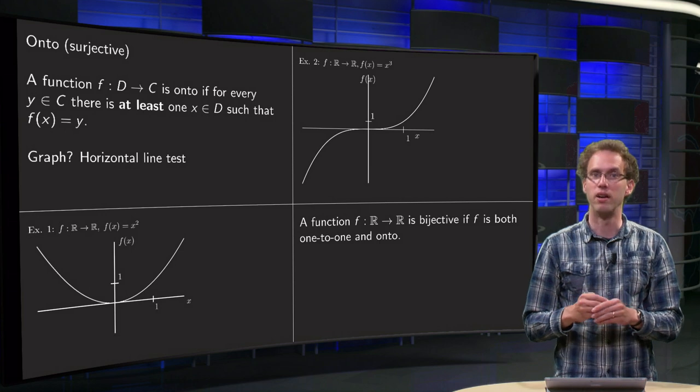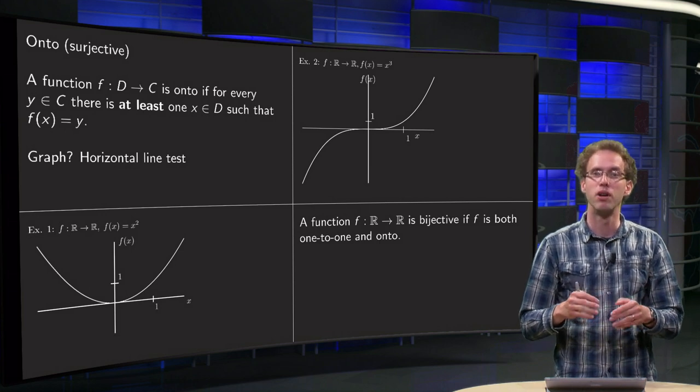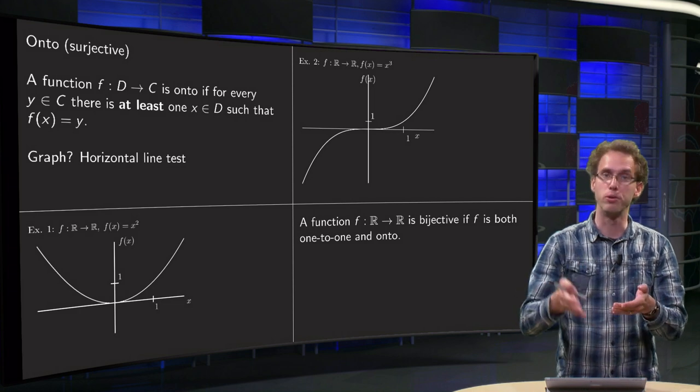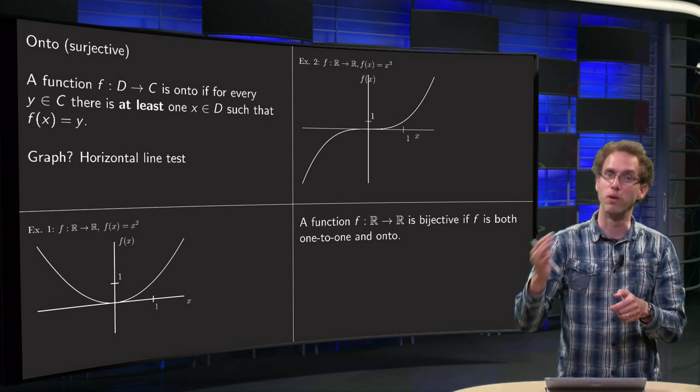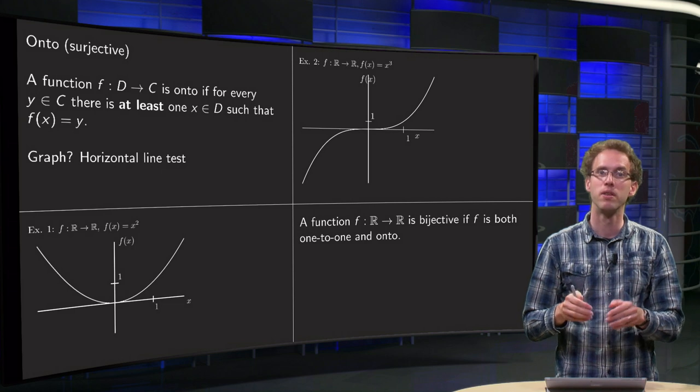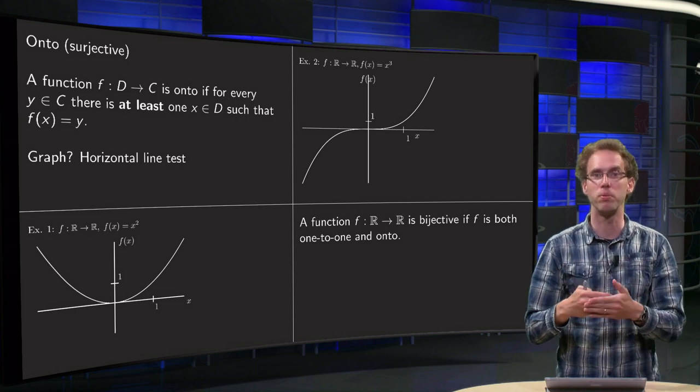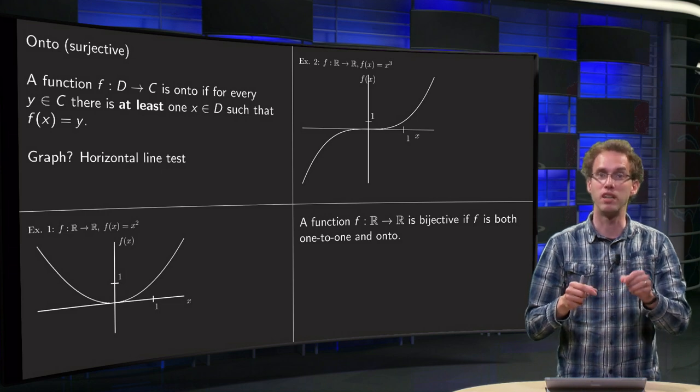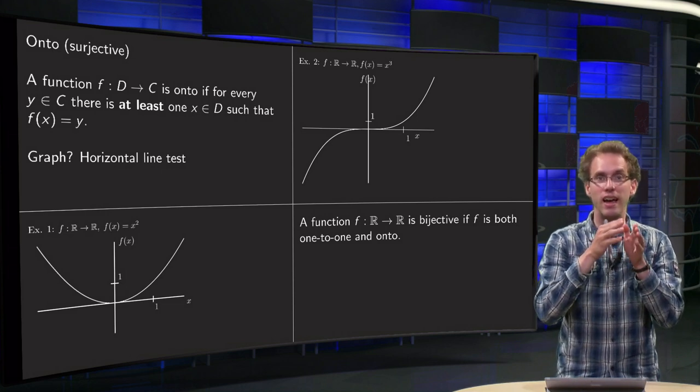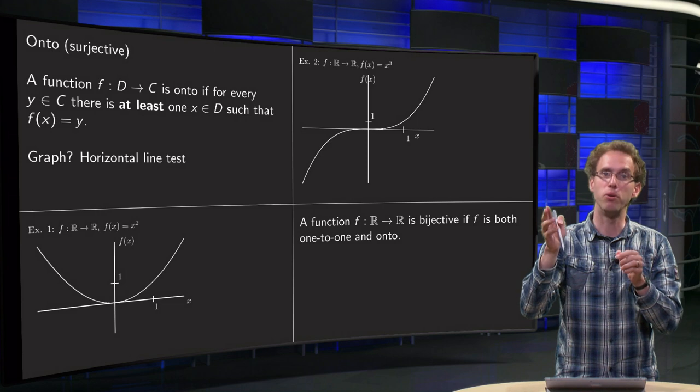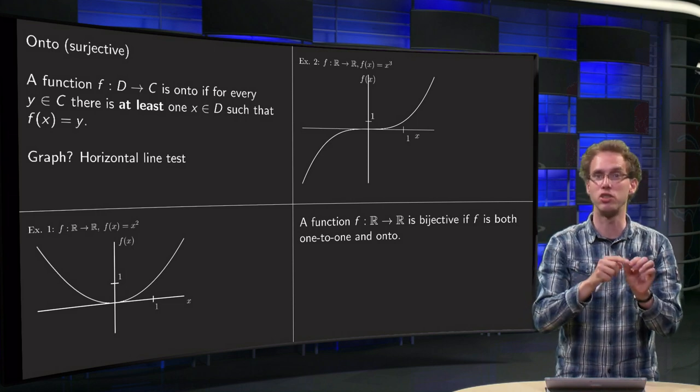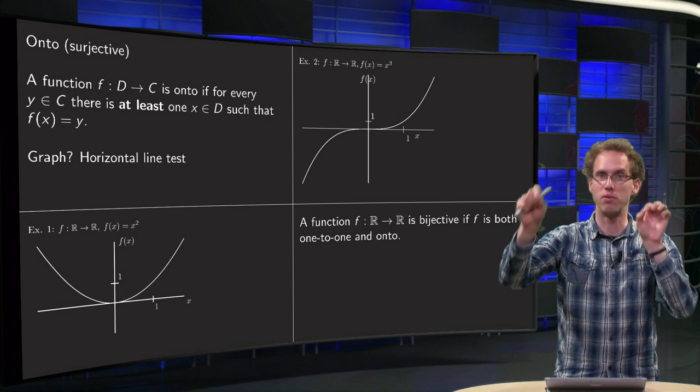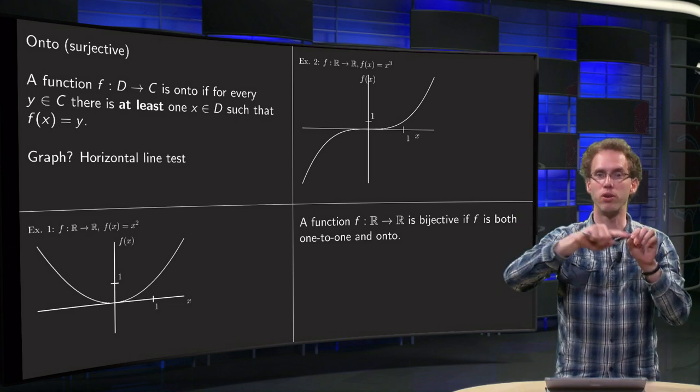Now finally, the notion of bijective. A function f from R to R is called bijective if it is both onto or surjective and one-to-one or injective. So a function which has both properties, a function which has the property that for each y in the codomain you have exactly one x in the domain such that f(x) equals y, is called bijective. So x's and y's belong to each other on a one-to-one basis.